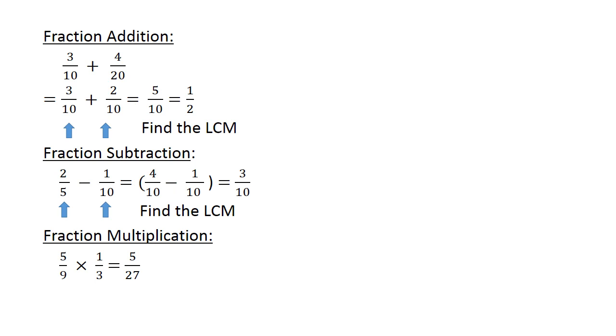Fractions and multiplication: 5 over 9 times 1 over 3. Multiply the numerators: 5 times 1 equals 5. Multiply the denominators: 9 times 3 equals 27. So the answer is 5 over 27.